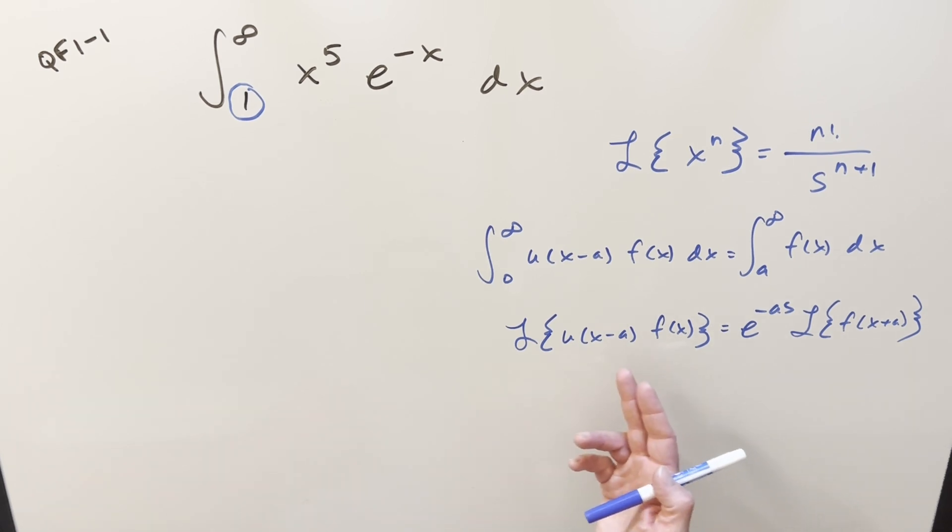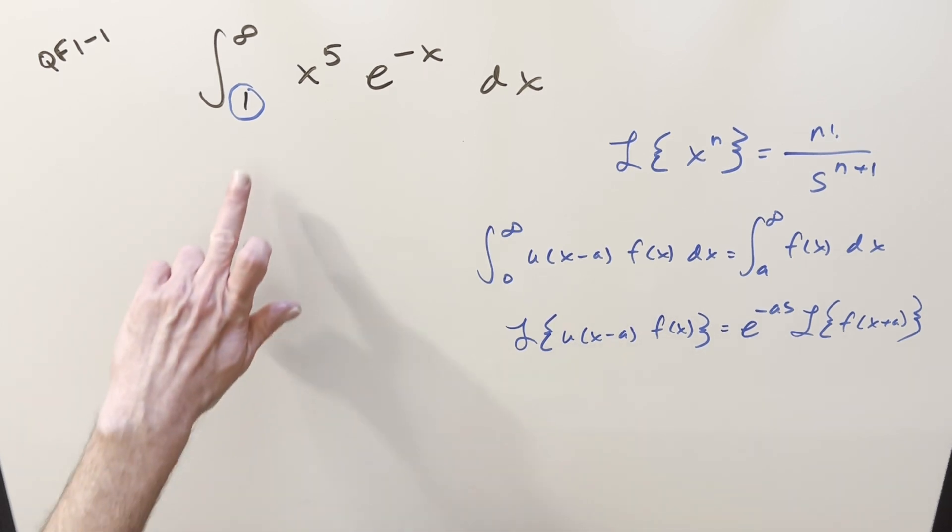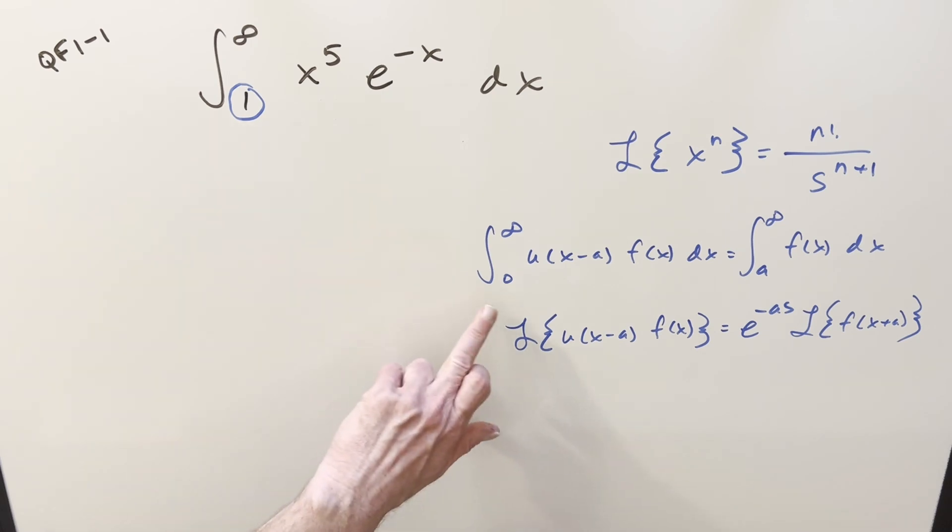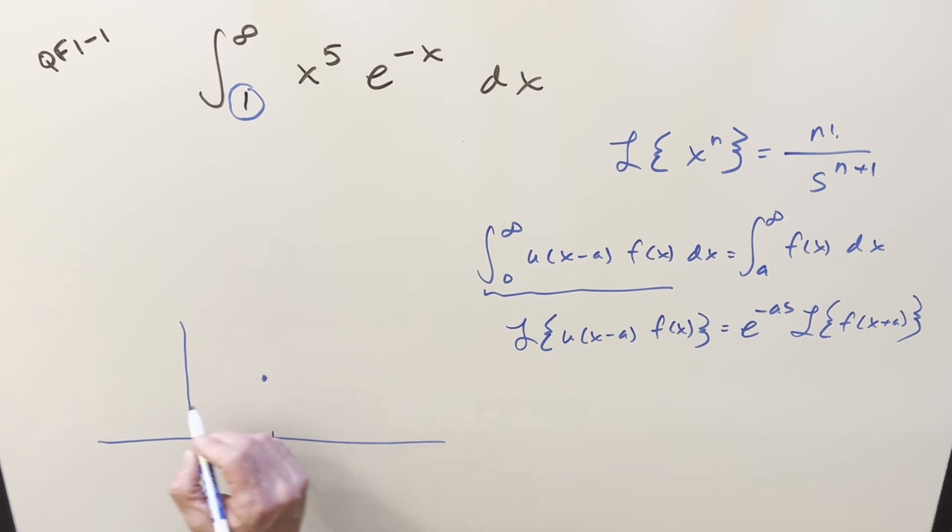But I've set this up with a few different formulas we can use. We can adjust the bound to 0 using this, just using a unit step function. The reason this works, the unit step function, if you're not familiar, it's just a very simple function that's 0 everywhere until at some value, some x value a, it's going to take on the value of 1.